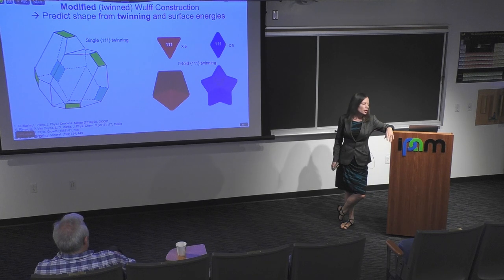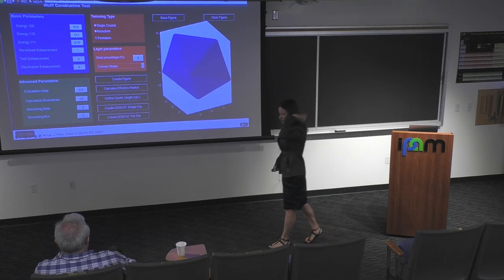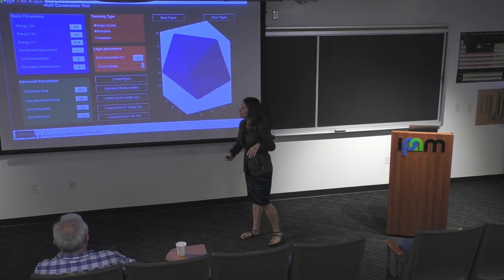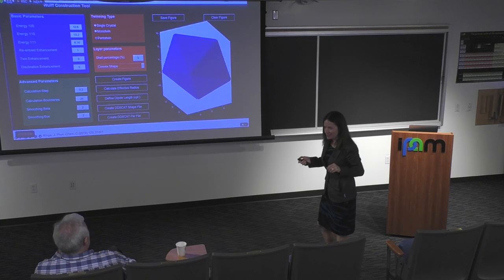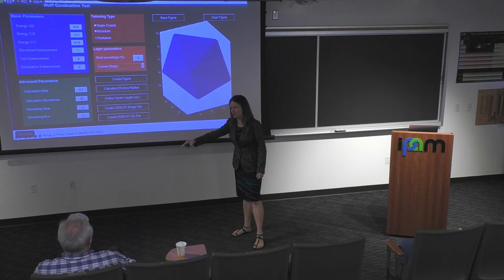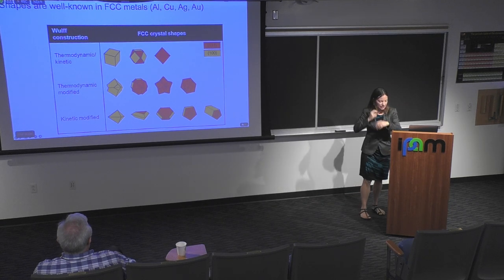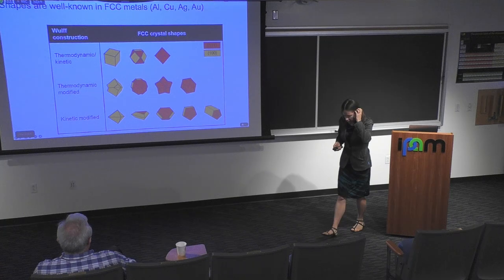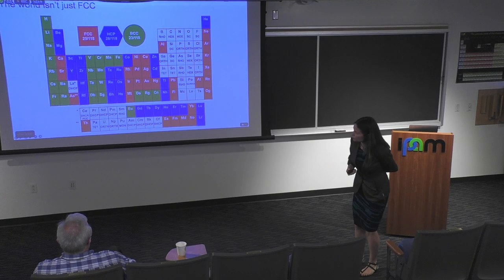We've worked a lot on this and actually have a graphical user interface from 2019 — you input your parameters and get a nice shape. The real purpose is not just to make funny shapes but to export them as an array of dipoles onto which you can do simulations. We know very well what happens in FCC, but we started being interested in magnesium and other compositions. It turns out the world is not just FCC — only about a quarter of elements crystallize in FCC. Hexagonal close-packed and body-centered cubic are really quite important.